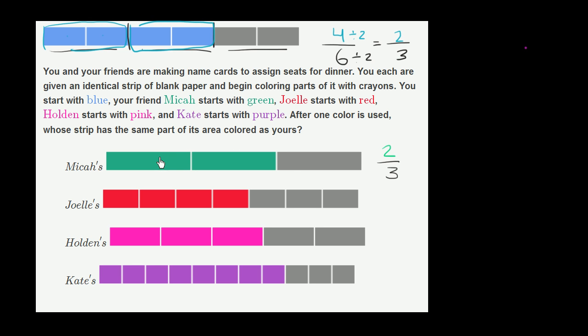Another way to think about it is if you divided each of Mika's sections into two, so if you divided this into two, this into two, and this into two, well, then how many total sections does he have? Well, he had three. Now each of those three have been divided into two. So we can multiply by two to get six.